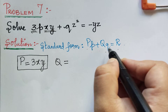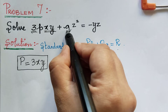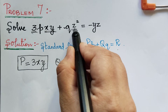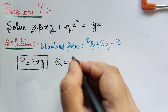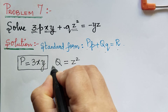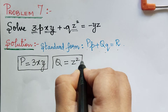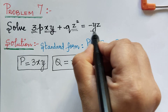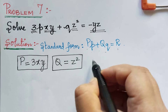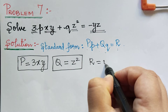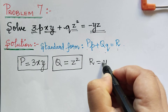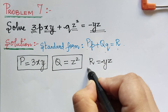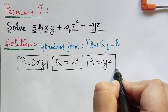Capital Q will be equal to — here we have small q with z squared — so z squared is capital Q. Then capital R is the term on the right, so capital R is equal to negative yz. So now we have obtained capital P, Q, and R.